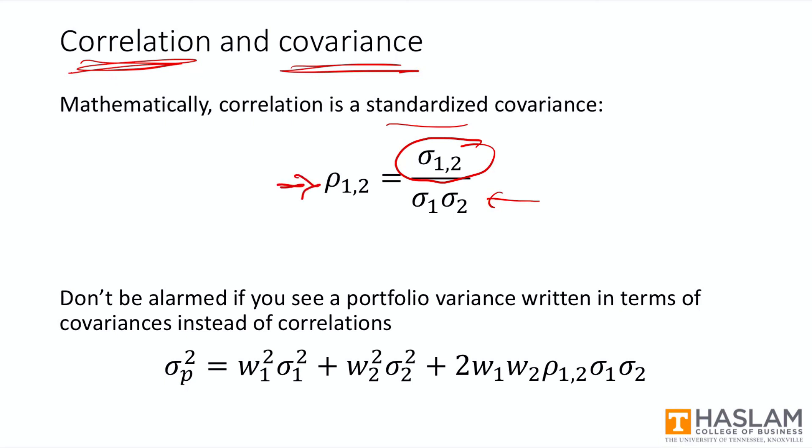Just don't be alarmed if you happen to see a portfolio variance summary that is written in terms of covariances instead of correlations. And so we could take this term here and write it as 2 times the product of the weights times the covariance.